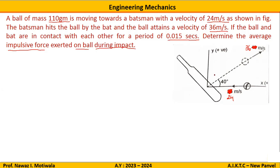Observing the figure, you can see there is a ball coming towards the bat with a velocity of 24 meters per second. This is the initial velocity U of the ball. When this ball is hit by the bat, it takes a new direction as shown, with a velocity of 36 meters per second. Hence, the final velocity of the ball after being hit is V = 36 meters per second.